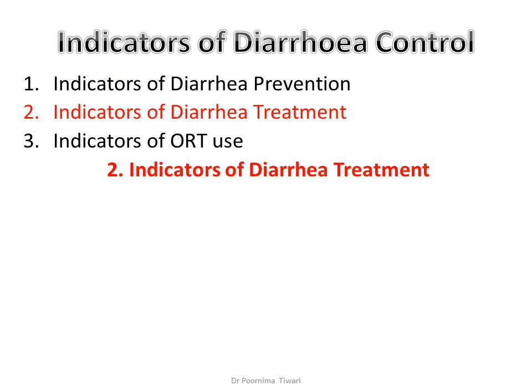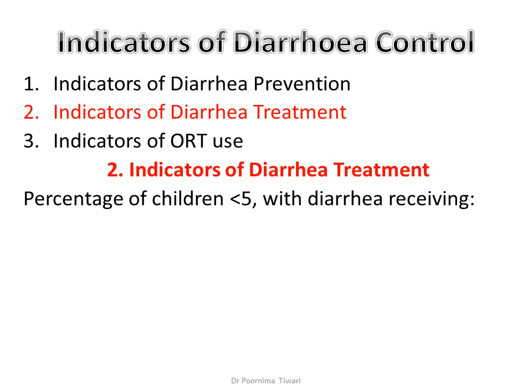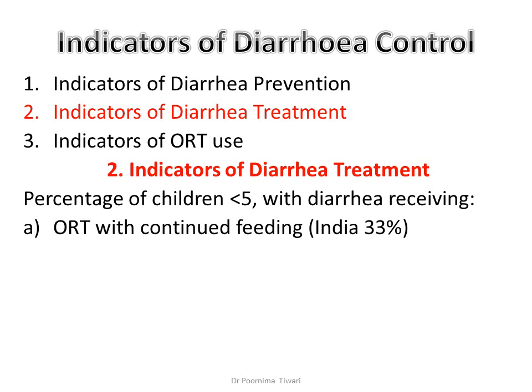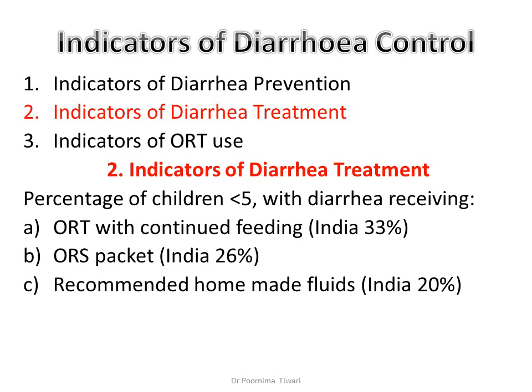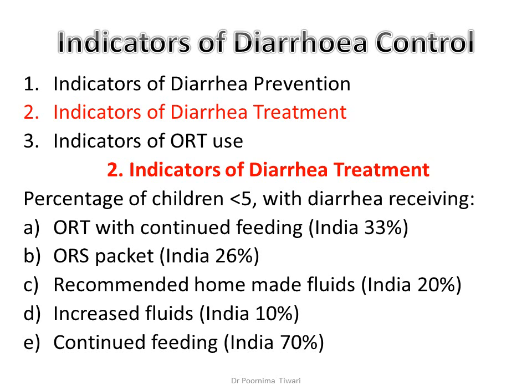Indicators of diarrhea treatment include: percentage of under-5 children with diarrhea who received oral rehydration therapy with continued feeding; percentage who received ORS packets; percentage who received recommended homemade fluids; percentage given increased amounts of fluids; and percentage advised and given continued feeding during the episode of diarrhea.